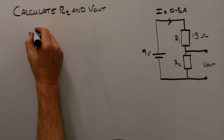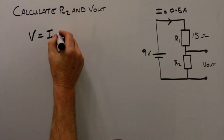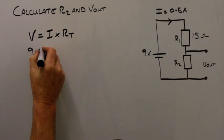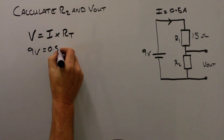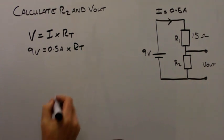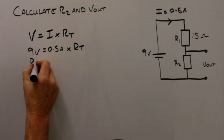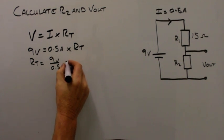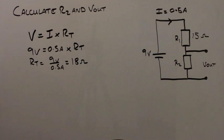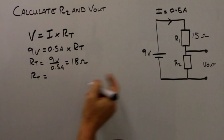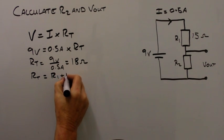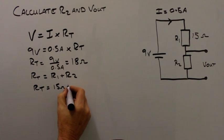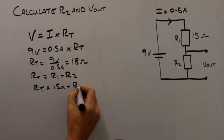We know that V equals I times Rt. We know that V equals 9 volts and I equals 0.5 amps, multiplied by Rt. Making Rt the subject of the equation, Rt equals 9 volts divided by 0.5 amps, which equals 18 ohms. We know that Rt in a series circuit equals R1 plus R2. Therefore Rt equals R1, which is 15 ohms, plus R2.